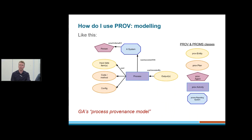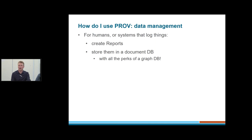How does GA use PROV? We often process chunks of data at GA and we have a very simple model using the provenance ontology. There's some process — the process generates outputs which are entities. The process itself is an activity. Then there's data, code and configuration that feed into that process, which are also entities. Finally, the process and entities might be related to a system and even a person who operates that system.